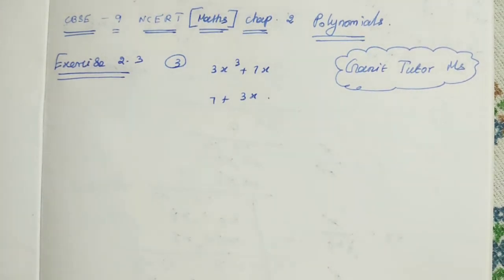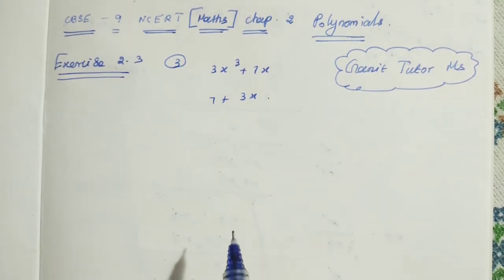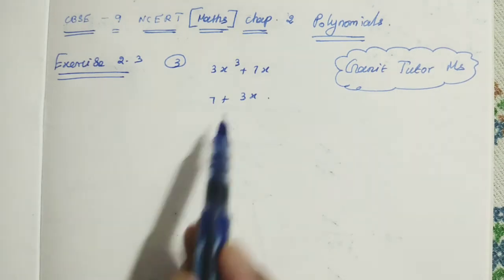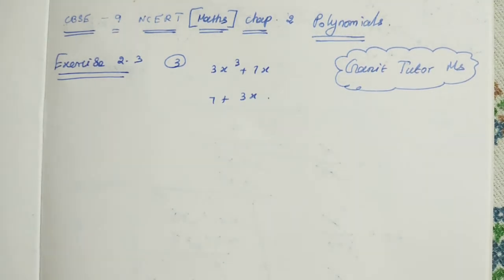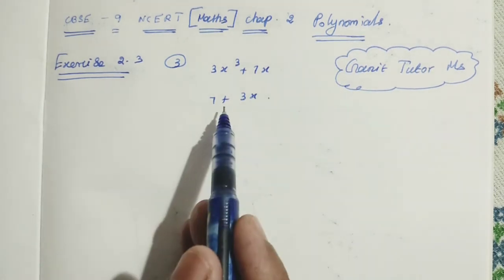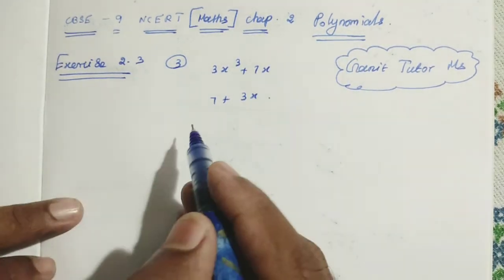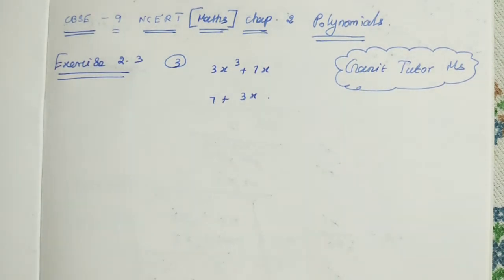So, as usual method, we should check if it is a factor of the polynomial. We can divide this polynomial by 7 plus 3x. When we get a remainder of 0, then 7 plus 3x is a factor. When the remainder is not equal to 0, then 7 plus 3x is not a factor. So we can do the division now by long division method.